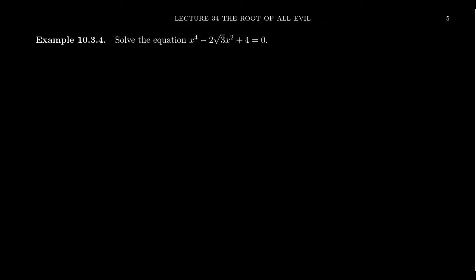In this video, we're going to solve the equation x to the 4th minus 2 root 3 x squared plus 4 equals 0. We want to solve this polynomial equation and find all complex roots.